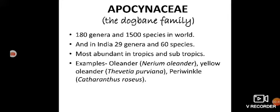If we talk about Apocynaceae, the classification is: Plant Kingdom → Dicot (2 cotyledons, reticulate venation) → Gamopetalae (petals are fused) → Bicarpellate (2 carpels) → Hypogynous flower → Gentianales. In Gentianales, leaves are opposite — this is the characteristic feature. Apocynaceae and Asclepiadaceae are both very important families from an examination point of view.